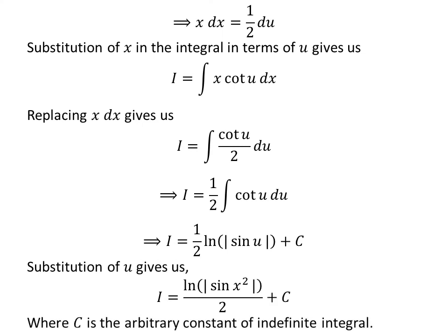Let us substitute u in terms of x as we had assumed u is equal to square of x. So, i the integral of x times cotangent of square of x is equal to half of natural log of absolute value of sin of square of x plus capital C.